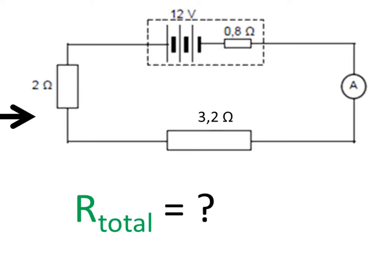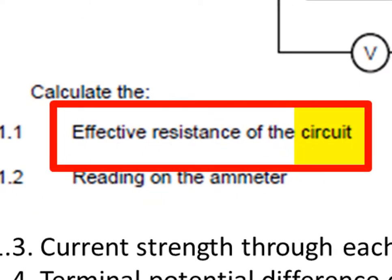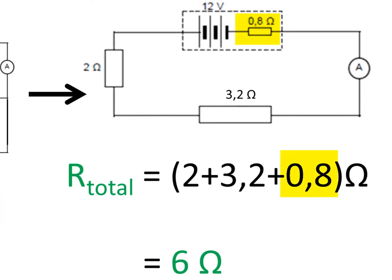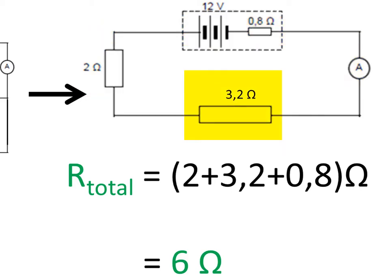It's easy to calculate the total resistance of a series circuit — try to do this yourself first. We simply add the resistances of the resistors in the circuit. Since the question said calculate the resistance of the circuit, we can include the battery internal resistance because it acts like any other resistor in series in the circuit, and it is also part of the circuit. So the answer is 2 plus 3.2 plus 0.8 equals 6 ohms.